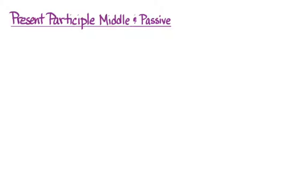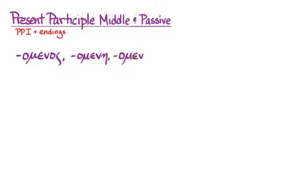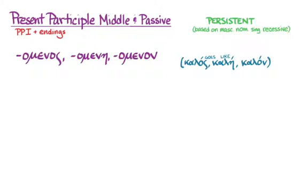Remember that we're making verbal adjectives — that's what a participle is. So we'll get the verb part from principal part one, and we'll need endings to give the participles their adjective qualities to agree with nouns in case, number, and gender. Those endings are represented by the nominative singular of all three genders. The present participle middle and passive is a three-ending adjective of the first and second declension, and it goes like kalos, kale, kalon. Only the accent is in a different spot — it's persistent, based on the masculine nominative singular after you put the recessive accent there.